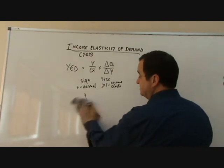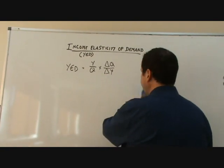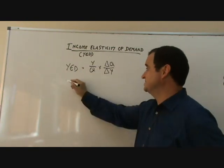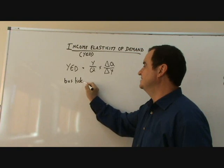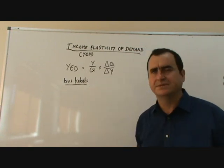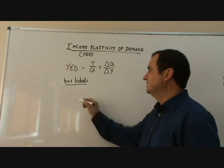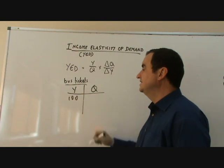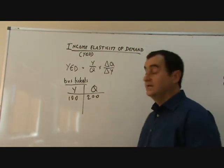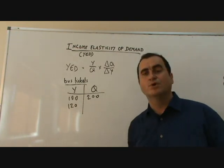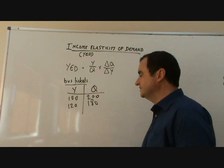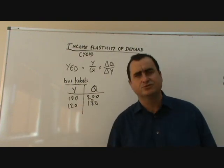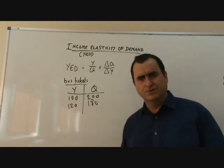But let's imagine that, at the same time as my increasing demand for steak, I also used to buy bus tickets. When my income was 100, I used to buy 200 bus tickets. But when my income rose to 120, I bought fewer — only 180 bus tickets. I could now afford to treat myself to a taxi ride instead of getting the bus on Friday mornings.